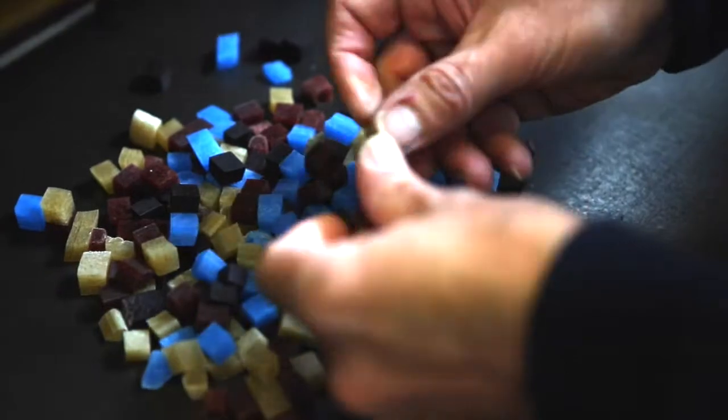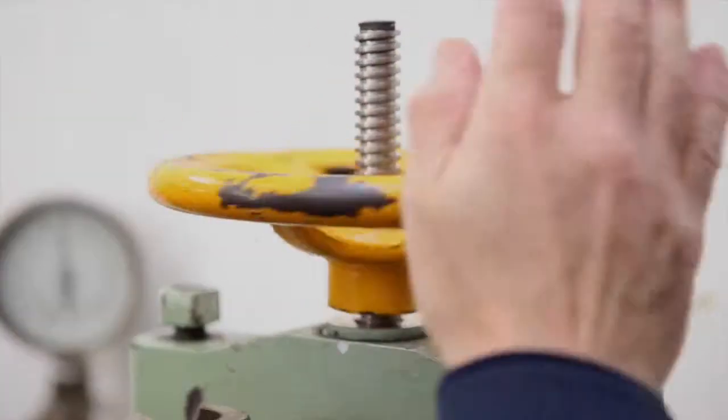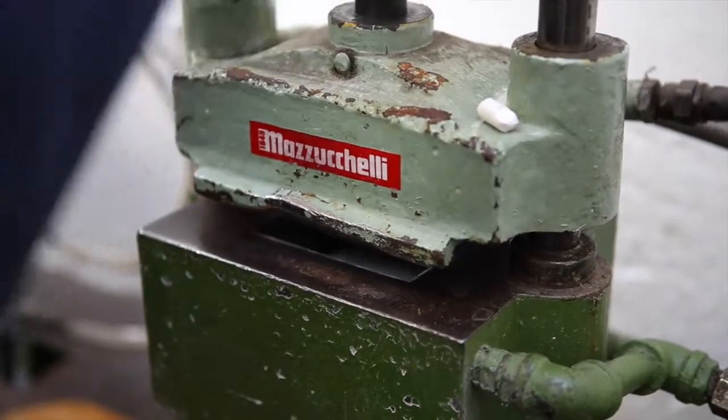After being mixed into a randomised pattern the chips are placed in a mould. The mould is clamped shut and under extreme pressure the individual pieces are transformed into a block.